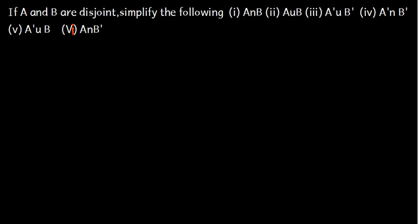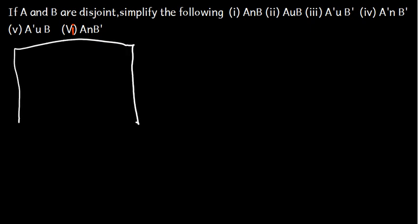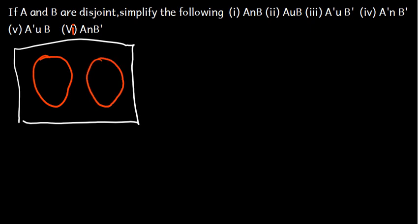Let's draw our sets. We have set A and set B — these are disjoint, so the intersection of A and B is empty. Let me put numbers: A contains 1 and B contains 2, and we have a universal set containing both.